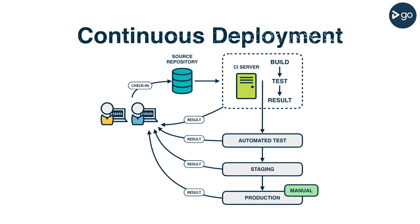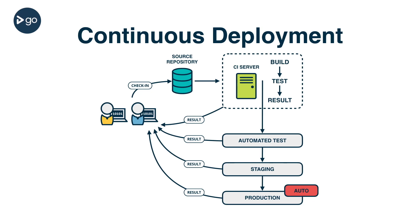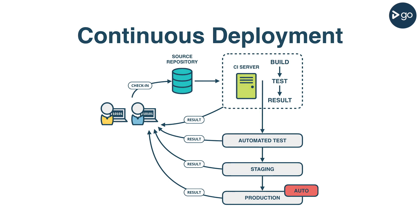With continuous deployment, there is no human interaction at all after code commit. If all of the tests pass, it gets deployed to production immediately. I believe there is no difference in what gets tested between continuous delivery and continuous deployment, though some would disagree and say continuous deployment is more rigorous. Continuous deployment is a great option for systems that you completely control, such as web-based applications. It's not as attractive for systems that need to be installed by end users. Ultimately, you need to decide what is an acceptable rate of change for your business when deciding if continuous delivery or continuous deployment should be your goal.